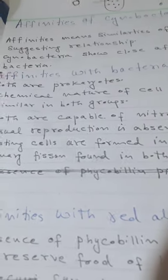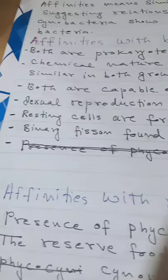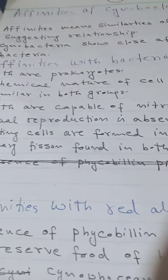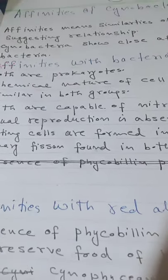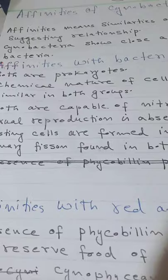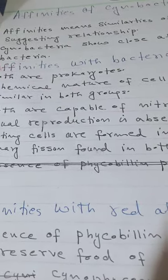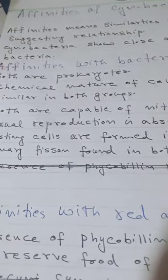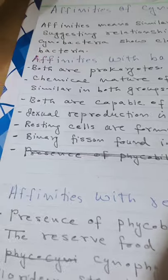First: both are prokaryotes — cyanobacteria do not have a proper nucleus, and in the same way bacteria also do not have a proper nucleus. Second: the chemical nature of the cell wall is almost similar in both groups. The cell wall of both bacteria and cyanobacteria contains peptidoglycan.